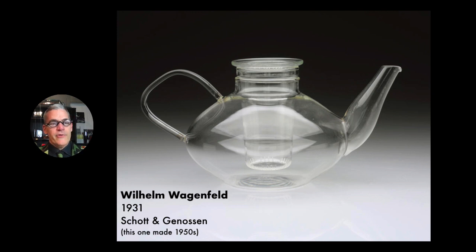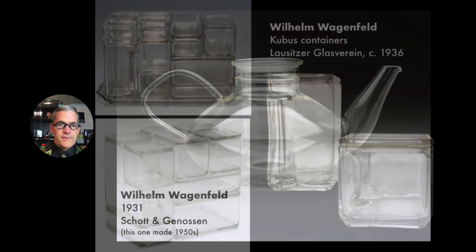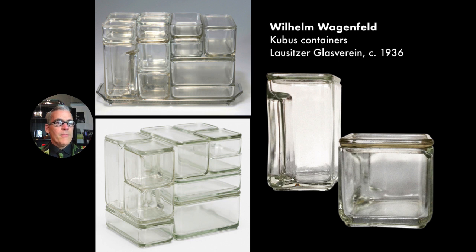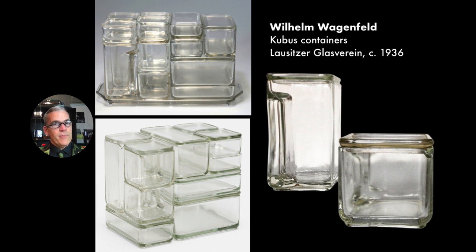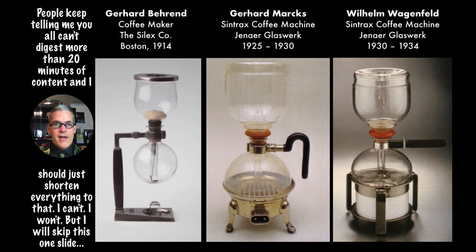The RISD Museum has some Wagenfeld glass on view — examples from designs of 1931, probably made later in the 1950s. Wagenfeld's Kubus containers are the objects that pop up most in museum collections. They are also made of heat-resistant industrial glass, and there are seven different sizes. They stack, they fit together, they share lids. The taller pieces have both a handle and a spout molded in, and they can be used in the refrigerator, in the pantry, in the oven, on the table.